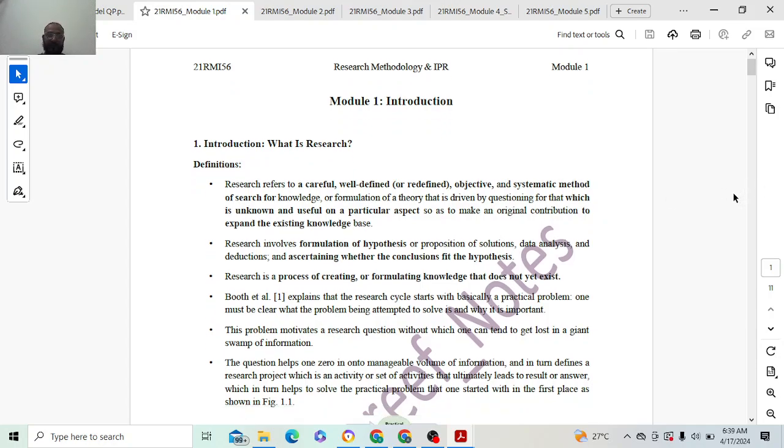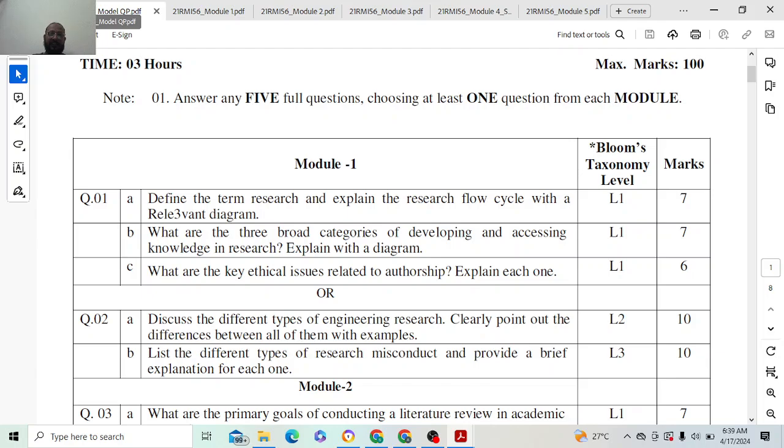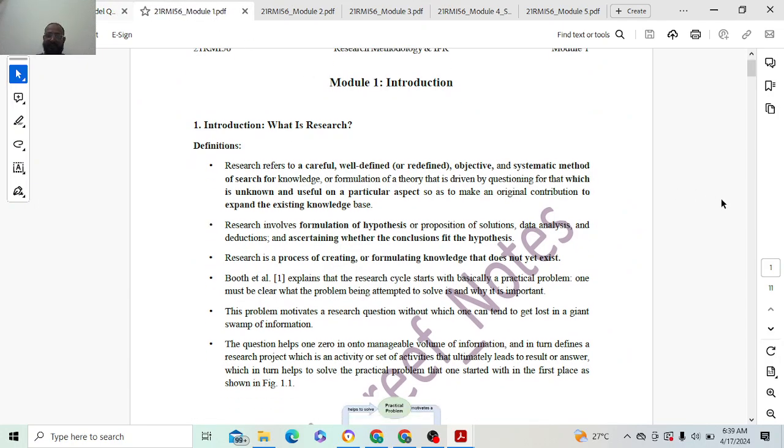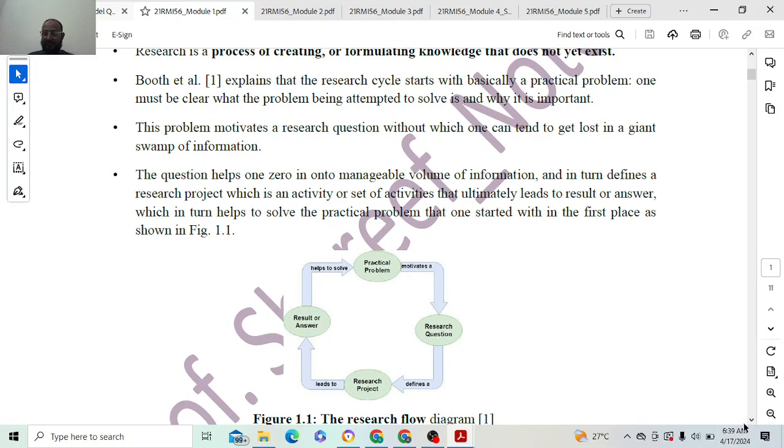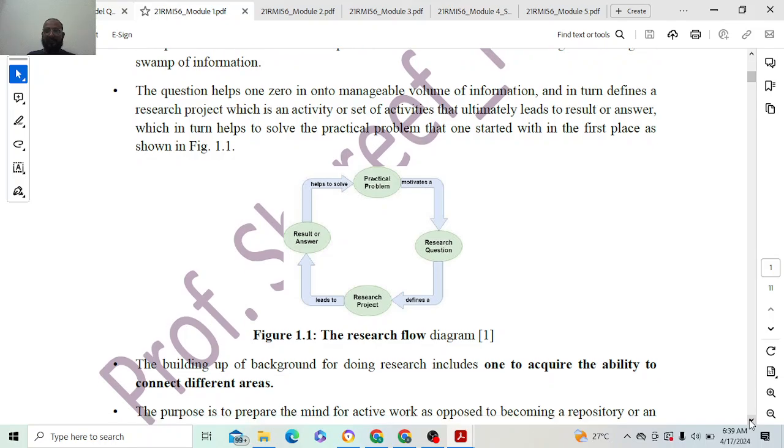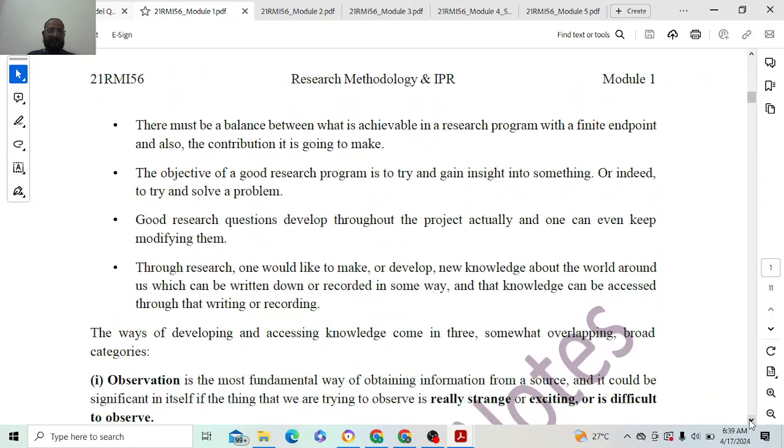The first question is define the term research and explain the research flow cycle with a relevant diagram. So this is the first topic of the first module, that is introduction. What is research? Here I have given the definitions. You can write that as a definition that will definitely carry one mark. And what they have asked is explain the research flow cycle with a relevant diagram. So research flow cycle means the same topic. We are having this table. So the same thing is explained here. And this diagram will help you to explain.